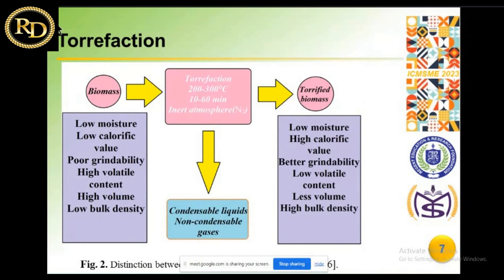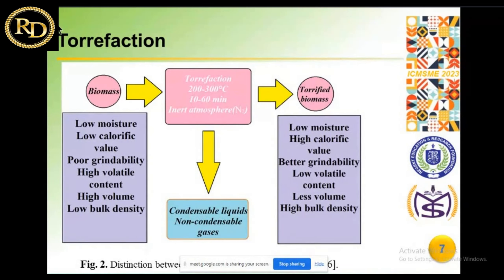Thermal methods below 200 degrees centigrade are used for wood preservation, while higher temperatures in the torrification method are used for energy purposes. In addition to temperature, torrification time or duration is another important factor in determining performance. Torrification can be carried out over several minutes to several hours. This process leads to moisture reduction, and the main focus is the transformation of biomass into a solid product comparable to coal.